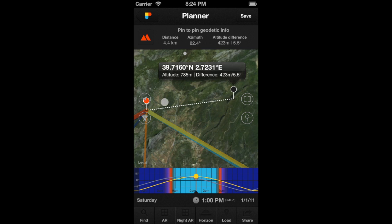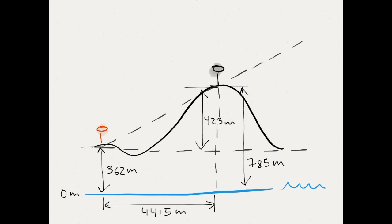The second value tells you the relative altitude between the obstacles pin and the observer's pin. In this example, this number is telling us that the obstacles pin is at a height of 423 meters above the place from where we want to take the photo. The third value is the relative elevation of the obstacles pin to the observer's pin: 5.5 degrees. The observer's pin is located at an altitude of 362 meters above sea level. The obstacles pin is at the top of the mountain, at an altitude of 785 meters above sea level. We know the distance between the two pins and their relative altitude — 423 meters — so PhotoPills automatically calculates the relative elevation of the obstacles pin to the observer's pin: 5.5 degrees.